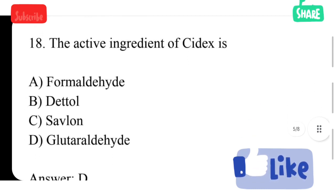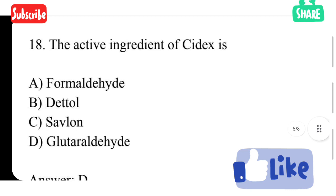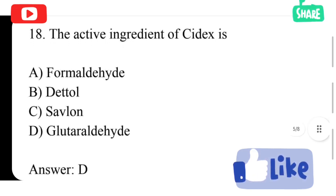The active ingredient of Cidex is option A formaldehyde, option B dettol, option C savlon, option D glutaraldehyde. Option D is correct answer. Glutaraldehyde is the ingredient. Cidex solution is used for instruments disinfection.